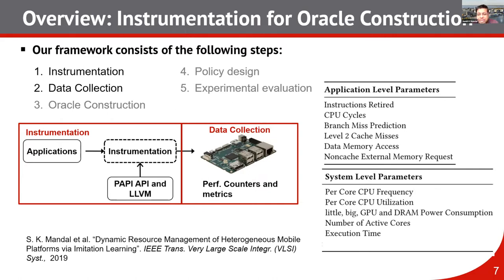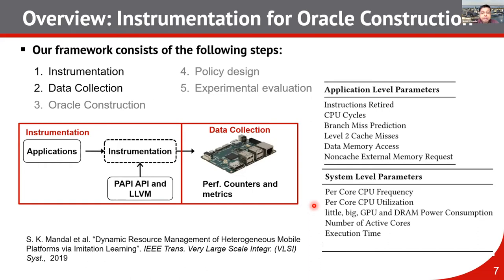We also collect system-level parameters like per-core CPU frequency, per-core CPU utilization, little/big/GPU/DRAM power consumption, number of active cores, and execution time. This step involves workload instrumentation and data collection — the data captures characteristics of the application as we change the device characteristics.